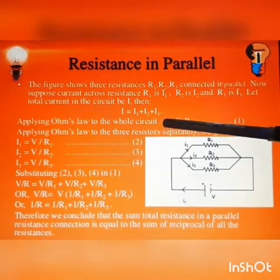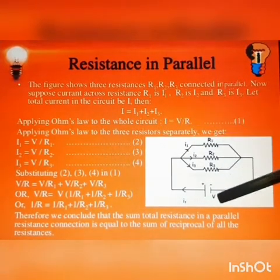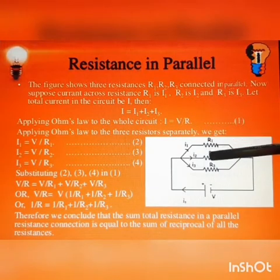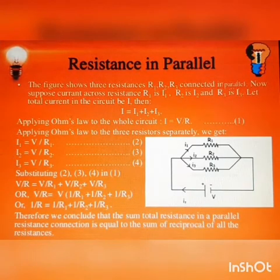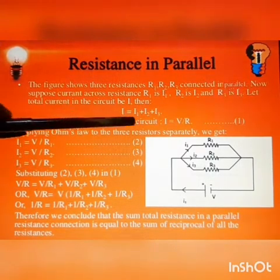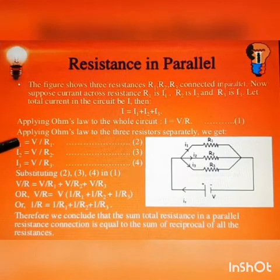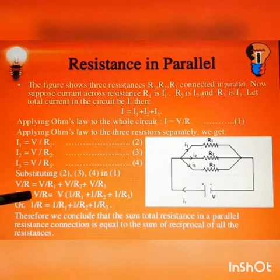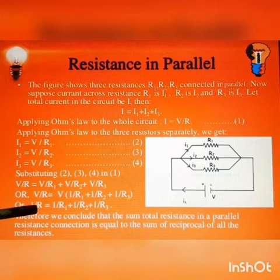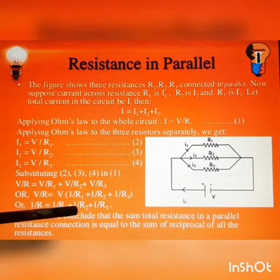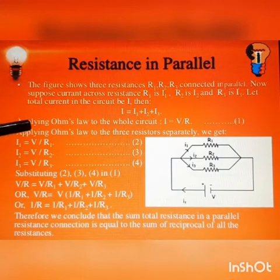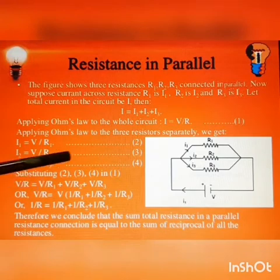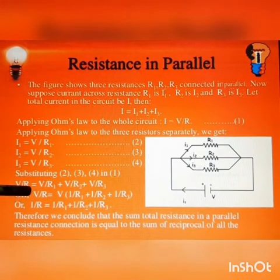With the help of Ohm's law, we get I equal to V by R. By applying this in all the three resistors, we get the values of I1, I2 and I3. After that, we put all these values into the equation and we get 1 by R equal to 1 by R1 plus 1 by R2 plus 1 by R3. This equation gives us the total resistance of all the resistances connected in parallel.